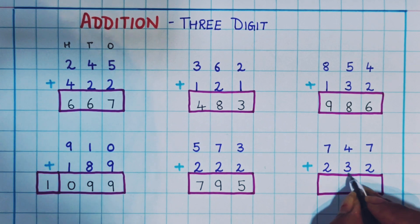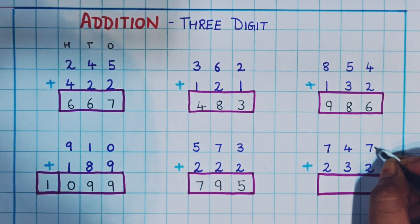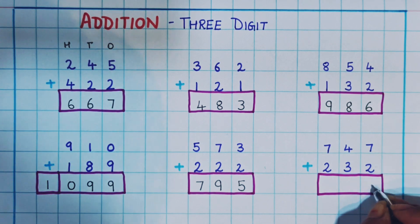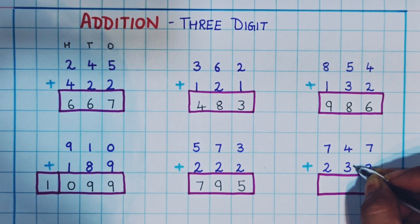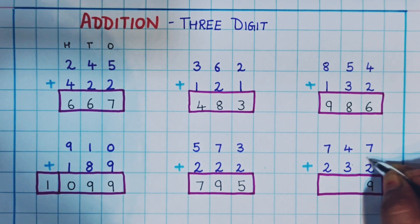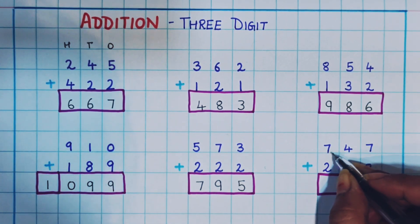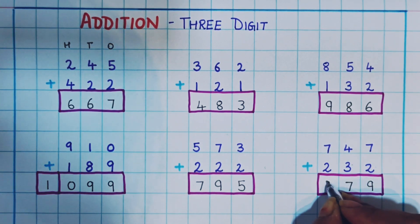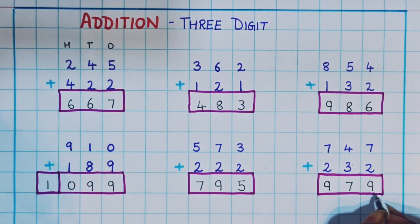Now let's do the next one: 747 plus 232. So 7 in the mind plus 2: 7, 8, 9 — here I will write 9. Then 4 plus 3: 4, 5, 6, 7 — here I will write 7. Now 7 plus 2 is again 9. So the answer is 979.